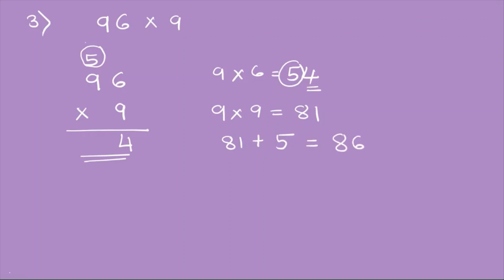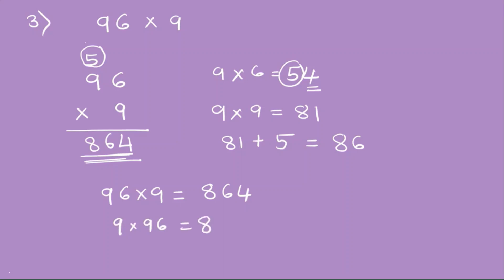So 81 plus 5 equals 86. We write 86 down here, and the multiplication gives us 864. So 96 times 9 equals 864, and 9 times 96 also equals 864.